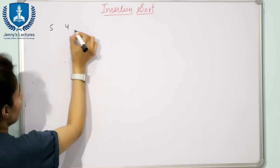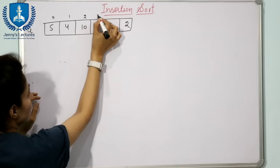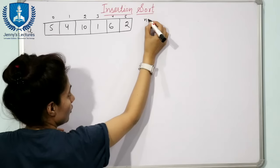Let us take one example. We have this array. The array name is A. The index starts from 0, 1, 2, 3, 4, and 5. The number of elements are 6, so here n is equal to 6.